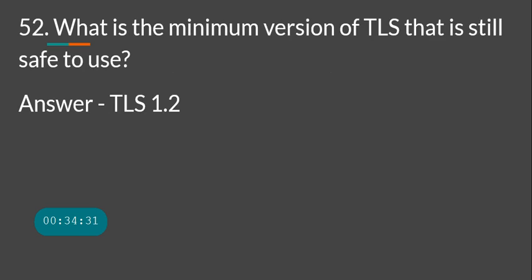Bonus question: what is the minimum version of TLS that is still safe to use? The S in HTTPS originally stood for SSL, but none of the SSL versions are secure anymore. TLS 1.0 and TLS 1.1 are both broken and should not be used. As of June 2024, the minimum still valid version is TLS 1.2, though TLS 1.3 is already available and recommended.